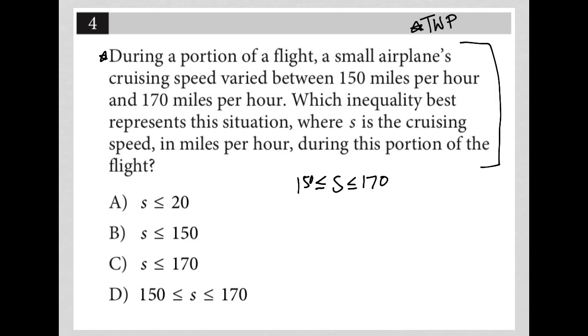The next sentence says which inequality best represents this situation where S is the cruising speed. So we have the right variable there in miles per hour, the right units there, nothing to convert during the portion of this flight. So I think we're good just by translating that first sentence there. And therefore the answer must be choice D.